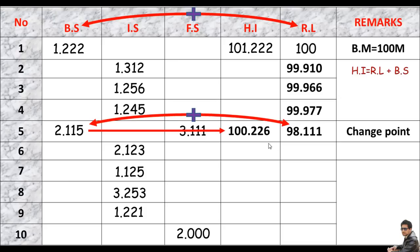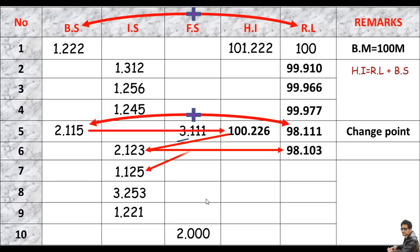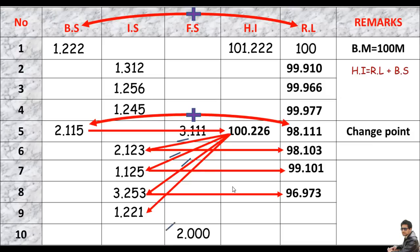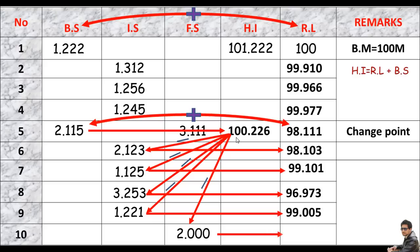To calculate the RL of point 6, subtract the reading of point 6 from HI — you get 98.103. For point 7, subtract the reading of point 7 from HI — you get 99.101, and so on for remaining points. For point 10, subtract the fore side from HI to get RL of point 10 = 98.226.